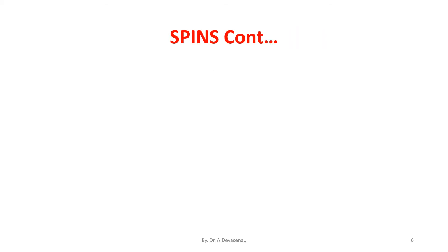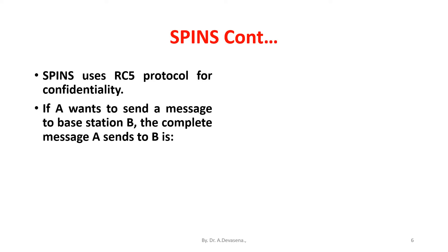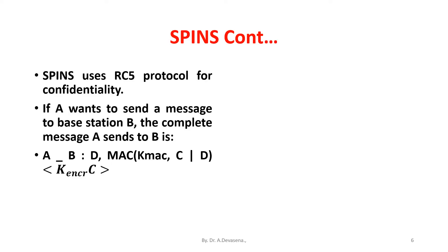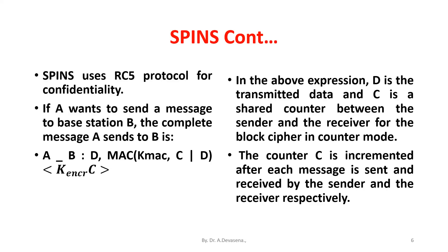SPIN uses the RC5 protocol for confidentiality. If node A wants to send a message to base station B, the complete message A sends to B is: A→B: {D, MAC(K_MAC, C || D)}, where D is the transmitted data and C is the shared counter between the sender and the receiver for the block cipher in counter mode. The counter C is incremented after each message is sent and received by the sender and receiver respectively.